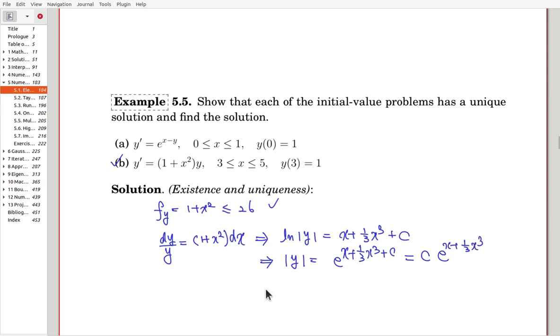Now, we eliminate the absolute value, so that would be plus minus c. Again, we are using the constant notation, so c times e to the x plus, here, 1 third of x cubed.